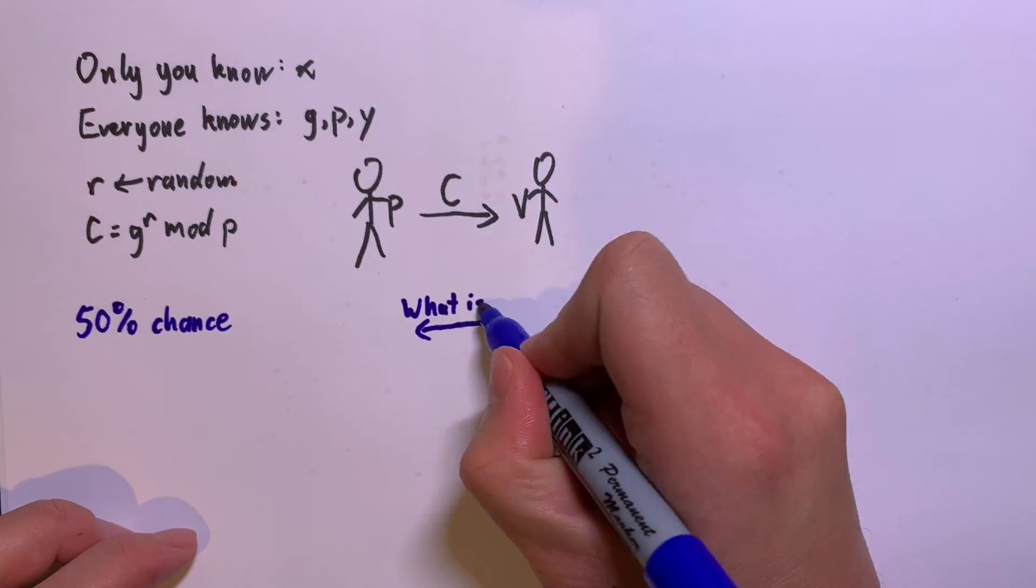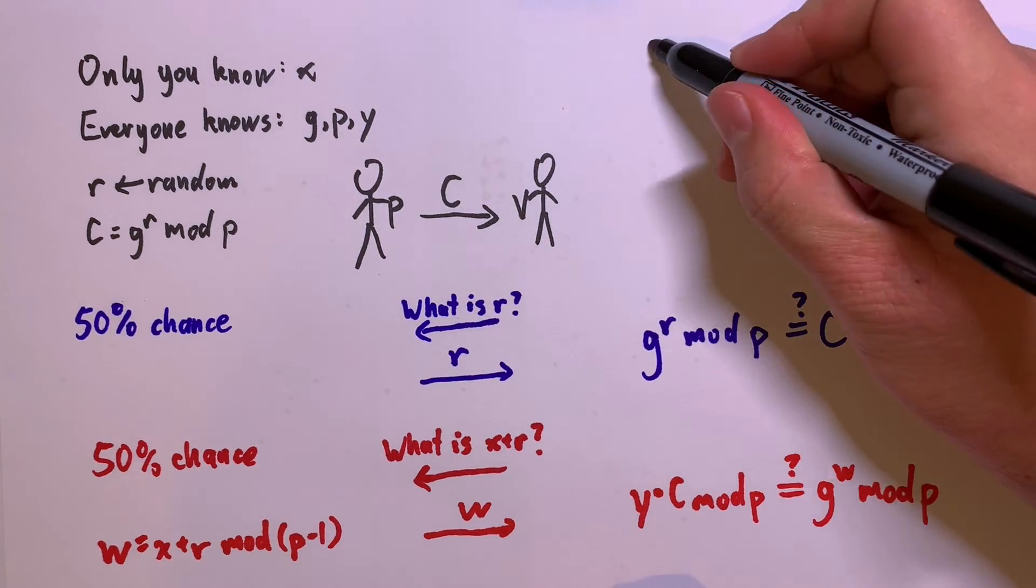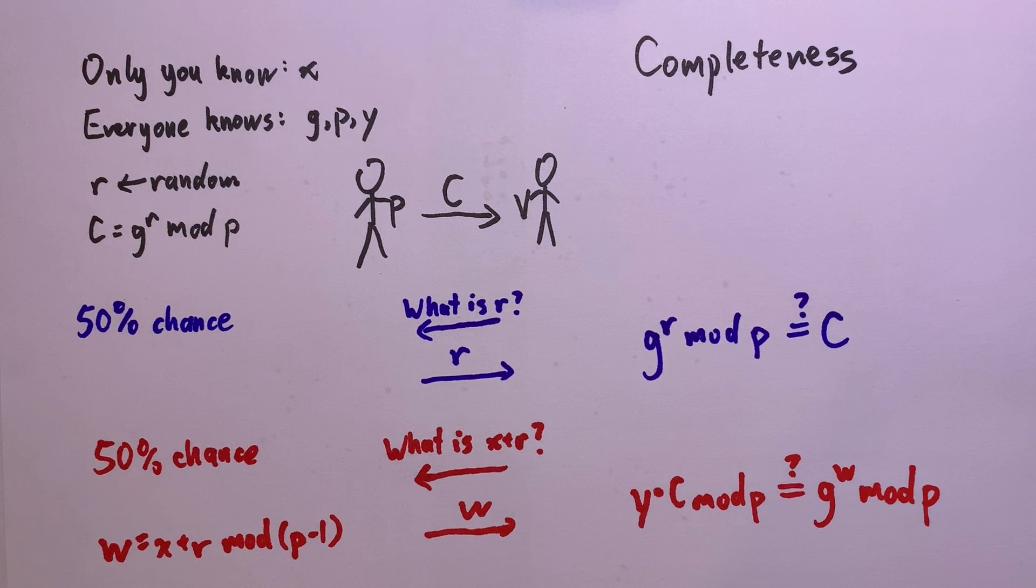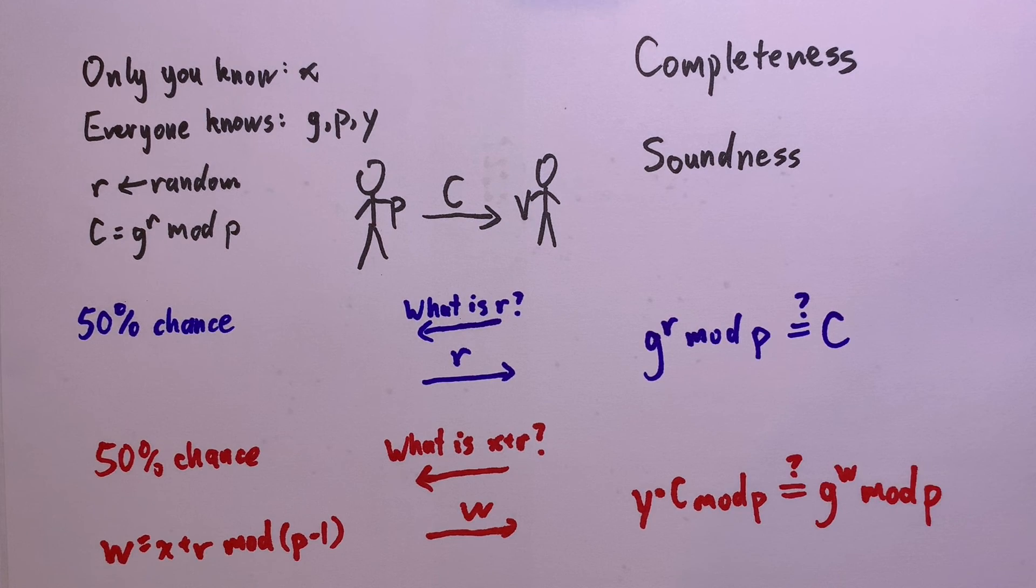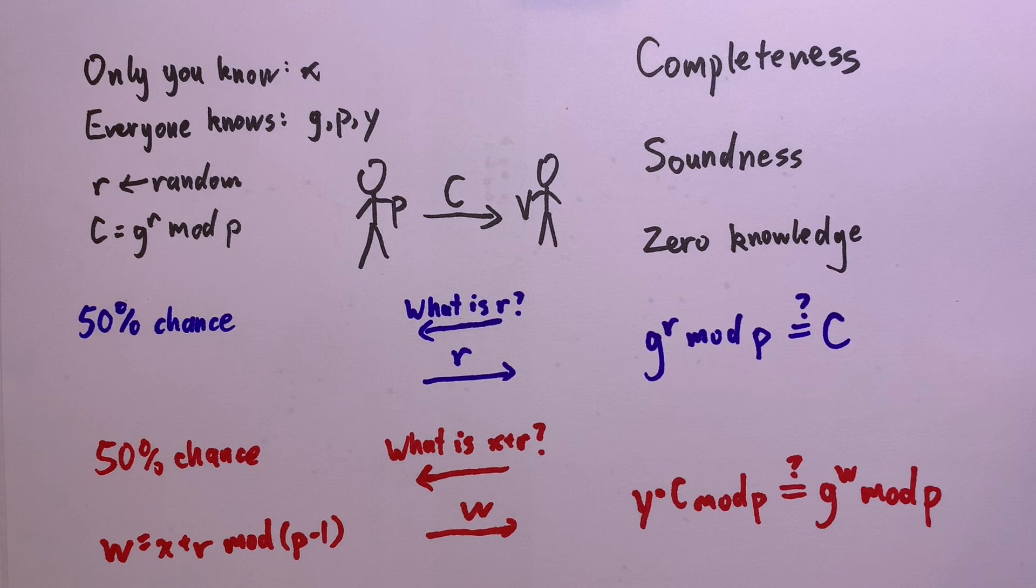So here is the full protocol. Just like in the magic flower example, if you know x, you can always answer correctly. But if you don't, you can only answer correctly with one half probability. And afterwards, the prover has no idea what x is. So there you go! A zero-knowledge proof that you can use to log in without sending your password.